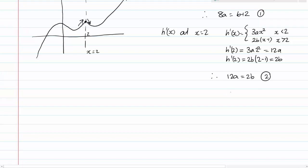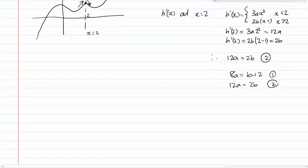Now this is pretty simple simultaneous equations. So we have 8a is equal to b plus 2 and we have 12a is equal to 2b. And hopefully with a little bit of rearrangement here you can see that b is equal to 8a minus 2 which gives us 12a is equal to 2 times 8a minus 2 and that gives us 12a is equal to 16a minus 4 which gives us negative 4a is equal to negative 4 and a equals 1 and therefore b is equal to 8a minus 2 which equals 6.